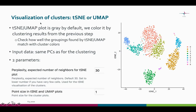After the clustering step, we want to visualize the clustering result using the dimension reduction method TSNE or UMAP. The plot resulting from TSNE or UMAP is gray by default, but the tool colors it based on the clustering result from the previous step. Your job is to check how well the groupings found by TSNE or UMAP match with the cluster colors — for example here, it's matching very nicely. The input data is the same principal components used for clustering.